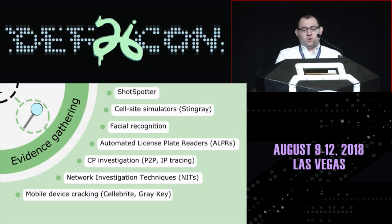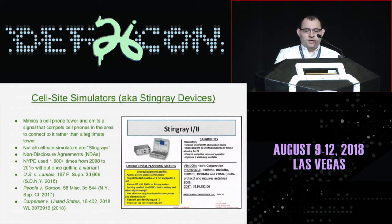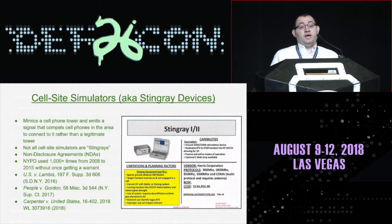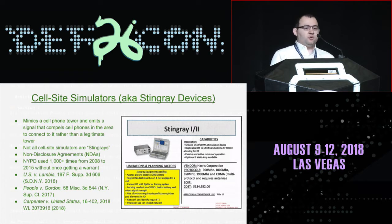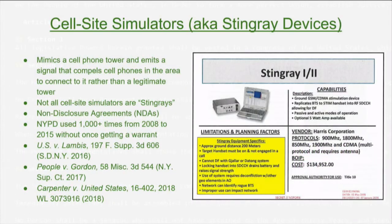For evidence gathering today, we're going to focus on cell site simulators and mobile device forensics. A cell site simulator is a device that mimics being a cell phone tower and forces all the cell phones within range to connect to it. It can then lock onto a particular phone and get a very precise location — for example, a particular apartment in a multi-story building, which is the US v. Lambus case. Some also have the capability of intercepting content, meaning text messages and voice phone calls. The term 'cell site simulator' covers all models rather than just the Stingray, which is one specific model.